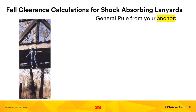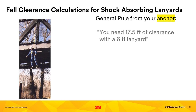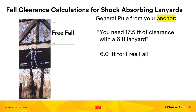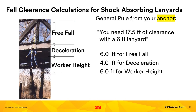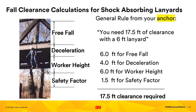If you take one thing away from this presentation, here it is. Fall clearance is always changing depending on the different fall arrest equipment being used. With a lanyard, fall clearance is always calculated from the height of your anchor. In this example, the total free fall distance is 6 feet, the deceleration distance is 4 feet, we take into account the worker's height accounting for harness stretch at 6 feet, and we give it a 1.5-foot safety factor. This gives us a total clearance requirement of 17.5 feet, measured from the anchor point.